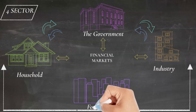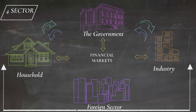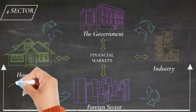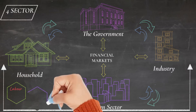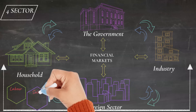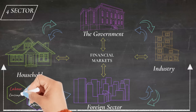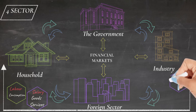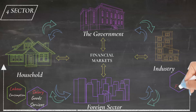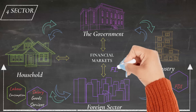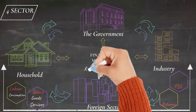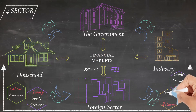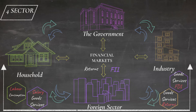An economy would have imports and exports of products with other global economies. There would also be exchange of factors of production like labor from household to the foreign sector in exchange of salary, capital from the foreign sector into the industry and the financial markets in the form of FDI or foreign direct investment and FII, that is foreign institutional investment, from which the foreign sector earns returns. Also, there would be a component of exchange of goods and services in the form of imports and exports between the foreign sector and the industry, helping both earn revenue income.